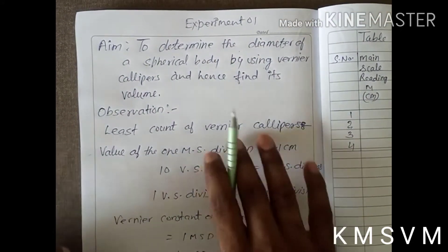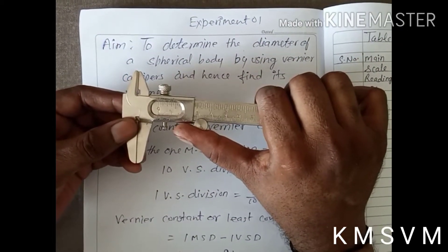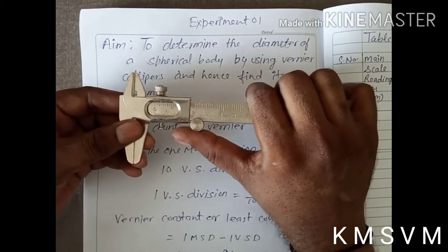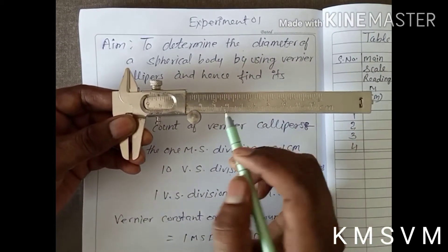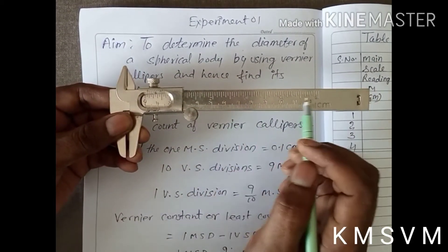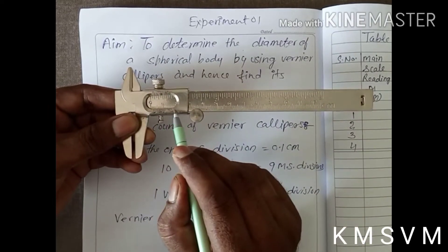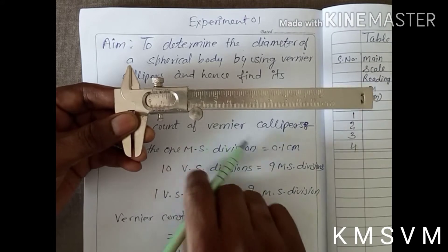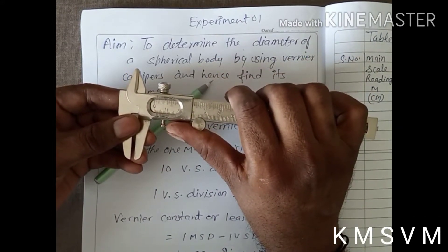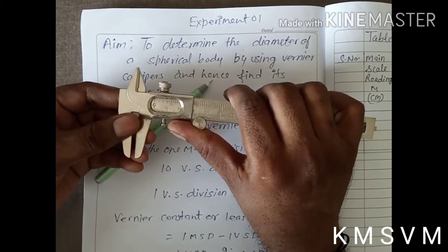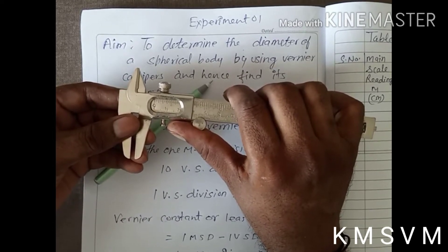This is the vernier calipers. In vernier calipers there are two types of scales. This is the main scale and this circular scale is known as the vernier scale. By the vernier calipers, we can measure the external diameter, internal diameter and depth.